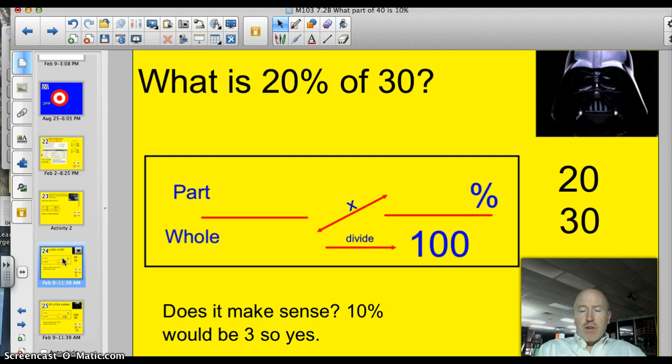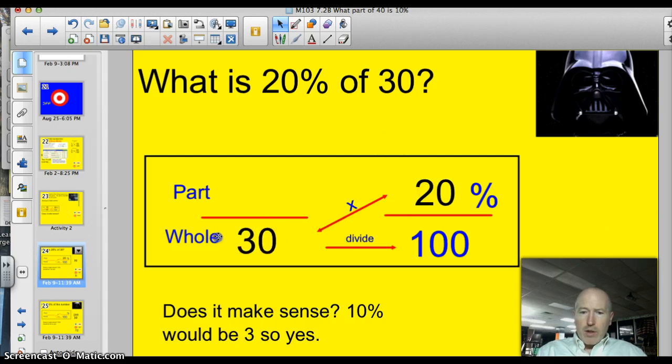What is 20% of 30? I don't know what to do on this. Darth, you want to give me some advice? Don't underestimate the power of the box, Luke. Alright. Well, thank you for that, Darth Vader. He says, don't underestimate the power of the box. So what do we got? We've got 20%. We'll pop that in the 20% part. We'll get a calculator of 30. We'll pop that in the 30.